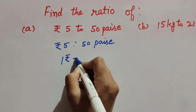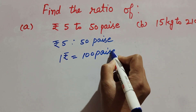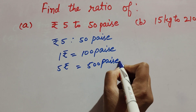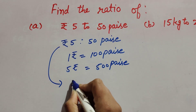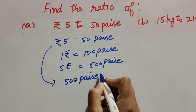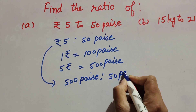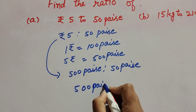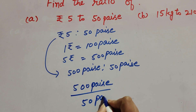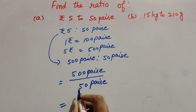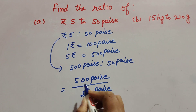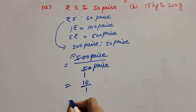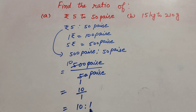I am changing rupees to paise. 1 rupee is equal to 100 paise, so 5 rupees is equal to 500 paise. We write this as 500 paise ratio 50 paise, which equals 500 over 50. Both are divisible by 50 — 50 tens are 500 — so we get 10 over 1. The ratio is equal to 10 ratio 1.